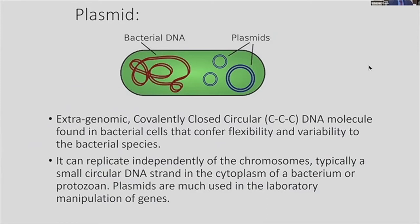I was talking about plasmids — let's try to understand what a plasmid is. Plasmids are extra-genomic, covalently closed circular DNA molecules found in bacterial cells that confer flexibility and variability to bacterial species. In simple terms, looking at a bacterial cell, there is a bacterial DNA which is a single loop — that's the bacterial genome. And you can see the plasmid here, which is a ring-like structure.